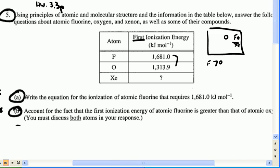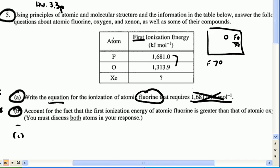Again, Xe is really, really, really low. Actually, I'm going to go ahead and answer question C as well. I thought that this was Ne, but it's Xe. So on the first one, it says write the equation for the ionization energy of atomic fluorine that requires this much energy. So it says write the equation for the ionization. Ionization means losing an electron. So we're going to go up here and write it. We have fluorine — it's atomic fluorine, so fluorine comes as a diatomic.